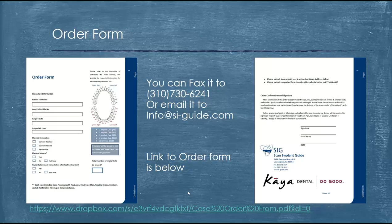The case order form also includes the type of surgical kit you'll be using, whether it's going to be cement-able, screw-retained, or removable, if it's going to be a flap or flapless surgery, and whether there will be an extraction. On the top right is a picture of the tooth numbering — just circle which tooth number you plan to place the implant. On the second page, sign, print, and date. You can fax the order form to 310-730-6241 or email it to info@siguide.com.